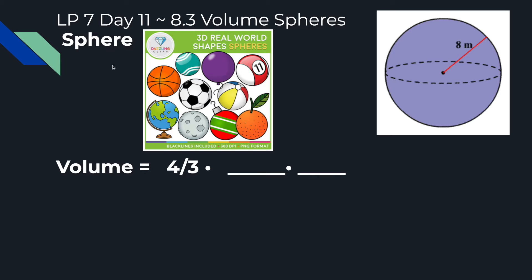We're going to look at the volume of spheres. Here are all the different examples of types of spheres in our world: a billiard ball from a pool table, soccer ball, basketball, a globe — our world is a sphere — the moon, Christmas tree bulbs, oranges, balloons, a beach ball. Generally, a ball is a really good example of a sphere.